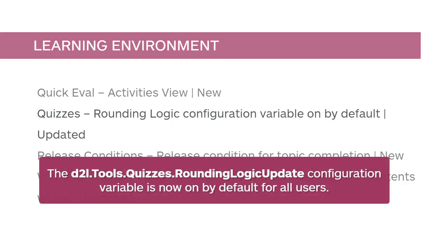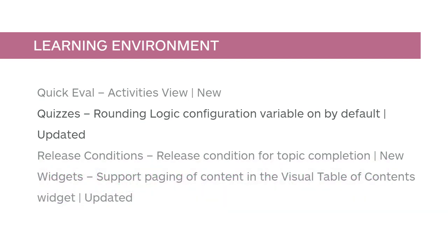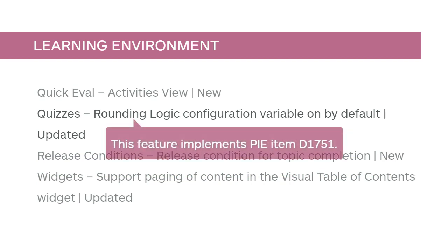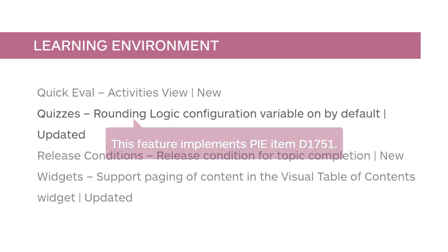The D2L Tools Quizzes Rounding Logic Update Configuration variable is now on by default for all users. Arithmetic and Significant Figures questions now round up from 0.5. This feature implements PI Item D1751.